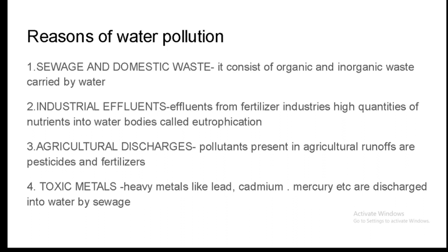Effluents from pesticide factories should be treated by a suitable method. Also, we can use natural pesticides like petroleum products or plant products like tobacco preparation, neem and turmeric extract, etc., which we can make at home and use for our plants.